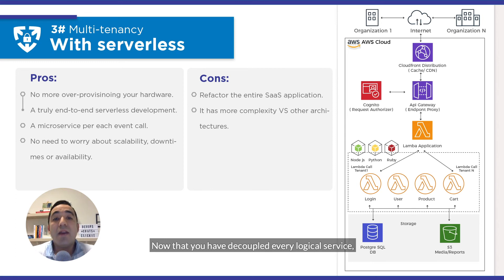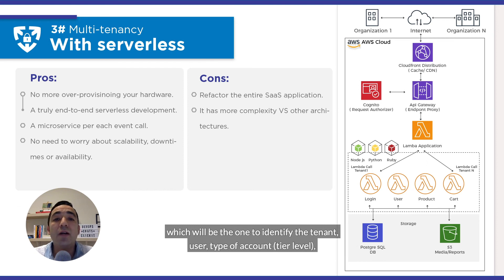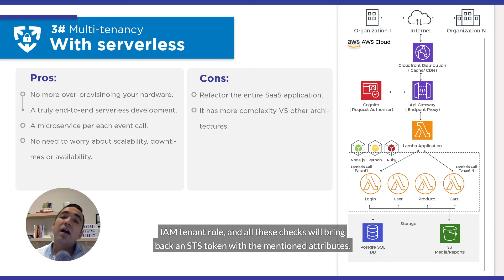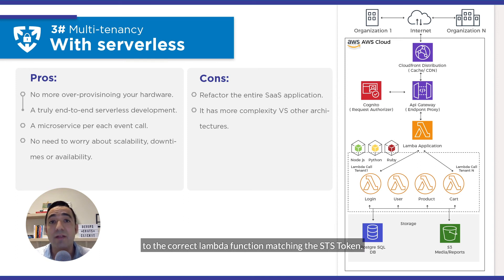Now that you have decoupled every logical service, the authentication and authorization model needs to be decoupled by a third-party service like Amazon Cognito, which will be the one to identify the tenant, user, type of account, and IAM tenant role. All these checks will bring back an STS token with the tenant's attributes. Amazon API Gateway will route all tenant functions to the correct Lambda function, matching the STS token.